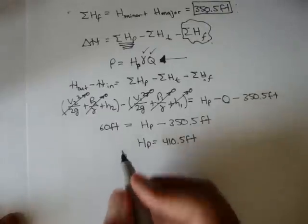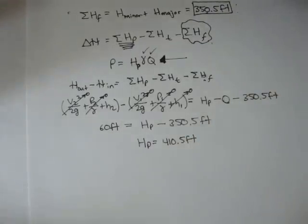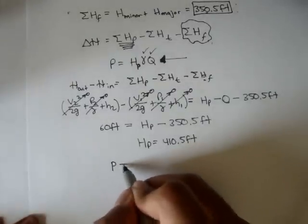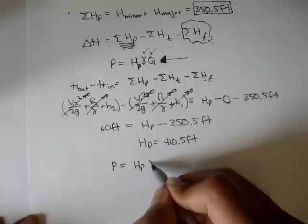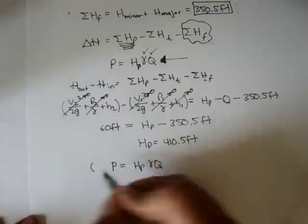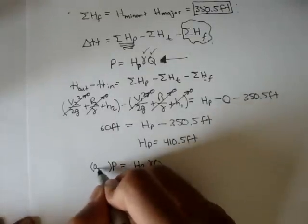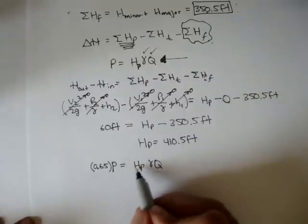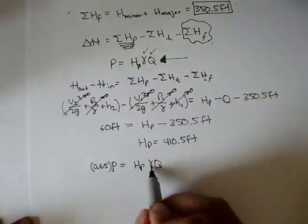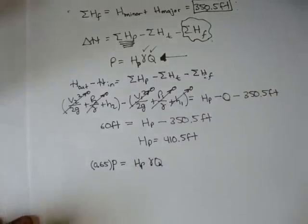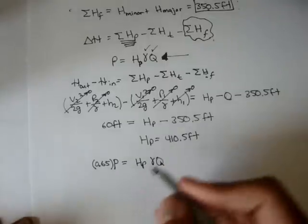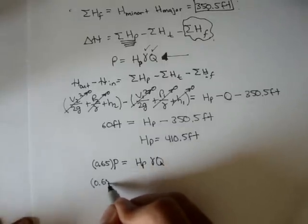So now we know our pump head. Now we can plug it into this formula right here. And also remember the original problem statement said the power of this pump is 65% efficient. So whenever we have an efficiency, we multiply the power over here by that percentage. In this case, it's 65%, which is also 0.65, times the power is equal to the pump head, times the specific weight of the fluid, times the volumetric flow rate of the fluid.